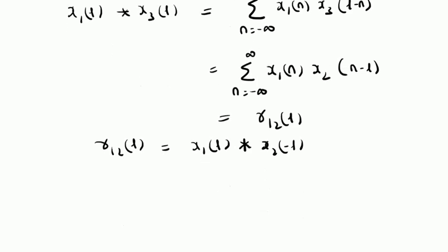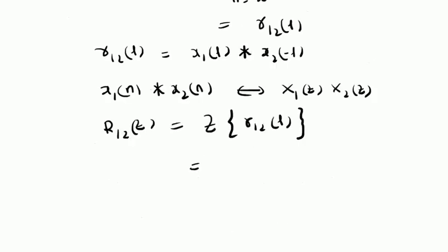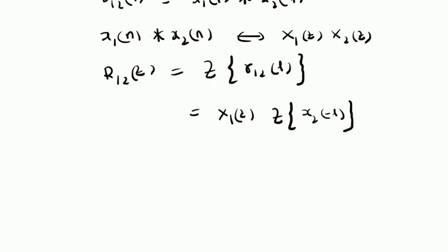From the convolution property of the Z-transform, we know that X1 of n convolved with X2 of n has equivalent Z-transform X1 of Z multiplied by X2 of Z — that is, it is multiplication in the Z-domain. By using this property, we can write the Z-transform of R12 of L. That is, R12 of Z equals X1 of Z multiplied by the Z-transform of X2 of minus L. This is the product of X1 of Z and the Z-transform of X2 of minus L. From the time reversal property of Z-transforms, we can write this as X1 of Z multiplied by X2 of Z inverse.